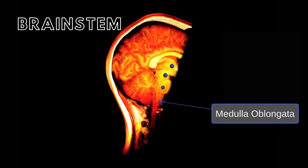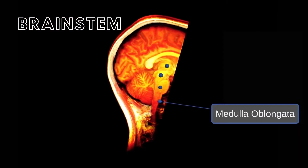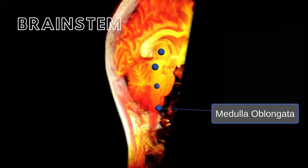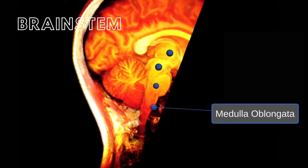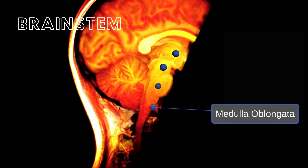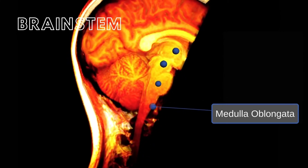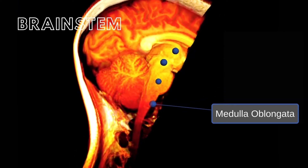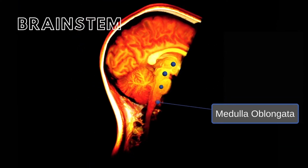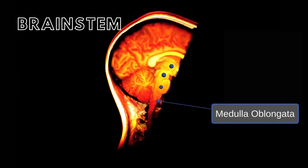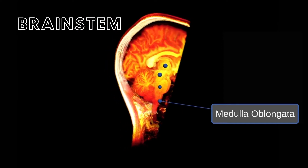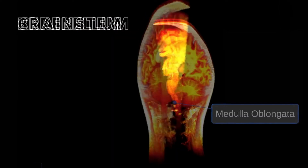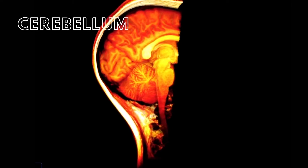And finally, the medulla oblongata, which is where the spinal cord connects to the brain, contains nuclei that function as the cardiovascular reflex centers, respiratory and rhythmicity centers, motor and sensory relay and processing centers, and nuclei for cranial nerves 8, 9, 10, 11, and 12.